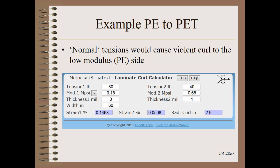We will illustrate this app with a simple example of laminating a 3-mil polyethylene web to a 1-mil polyester web. We enter the values for tension and width that are readily known. If you don't know the modulus, merely click on the question box and it will give you a table for some of the common materials.